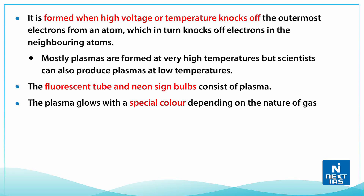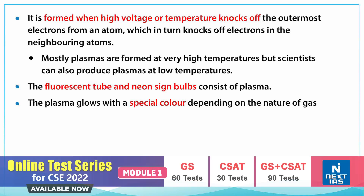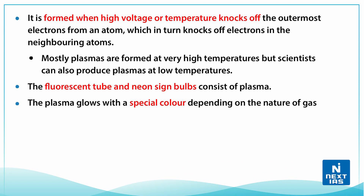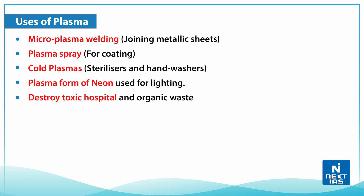Plasma is formed when high voltage or temperature knocks off the outermost electrons from an atom, which in turn knocks off the electrons in neighboring atoms. Mostly plasmas are formed at very high temperatures, but scientists can produce plasmas at even low temperatures. Fluorescent tubes and neon-sized bulbs consist of plasma. The plasma glows with a special color depending on the nature of the gas.